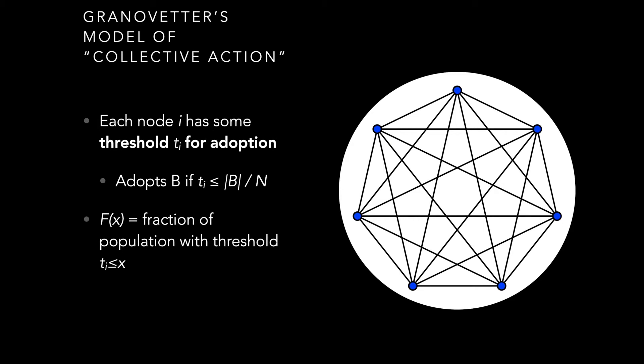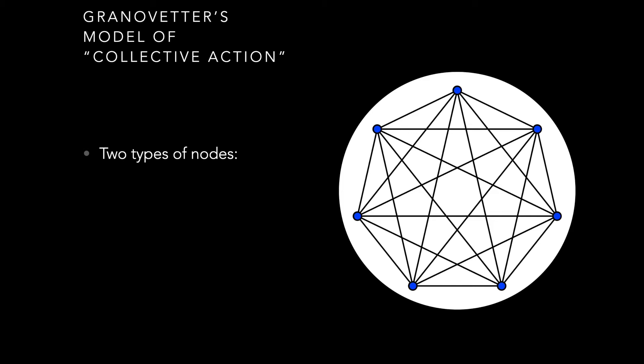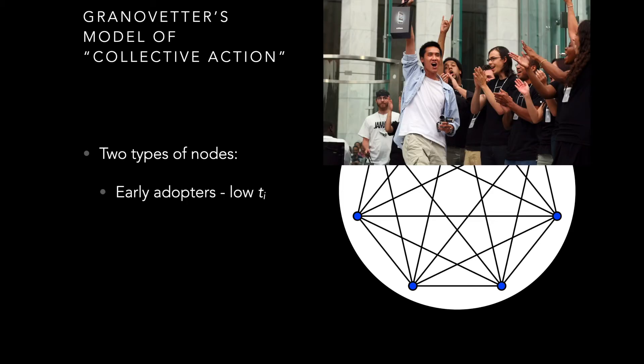We model this as F(x), the fraction of the population whose threshold is less than or equal to x, and S(t), the fraction of nodes participating in option B at a particular time frame. This gives us two different kinds of nodes: early adopters, those with a relatively low threshold who don't need many nodes in the graph to adopt a behavior before they want to adopt it too. We see this with Apple's iPhone and with new social networks like Snapchat or Instagram, where you need some critical mass of people before the platform becomes valuable.